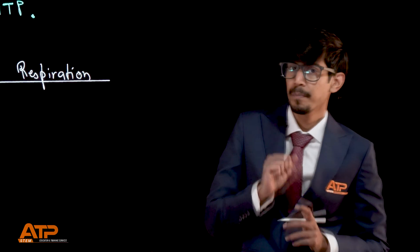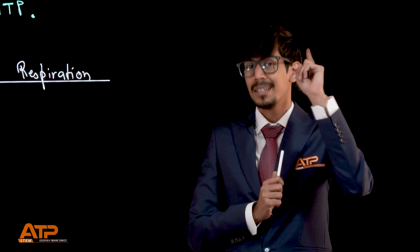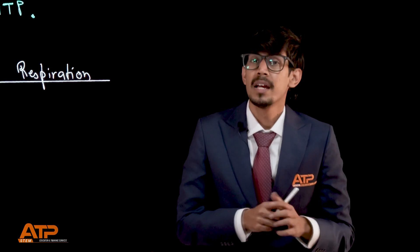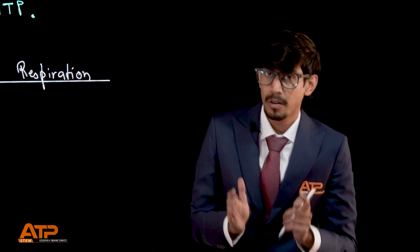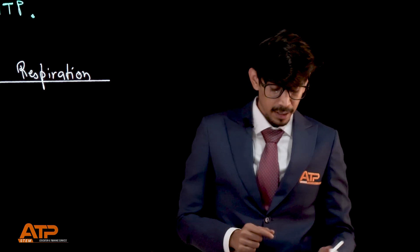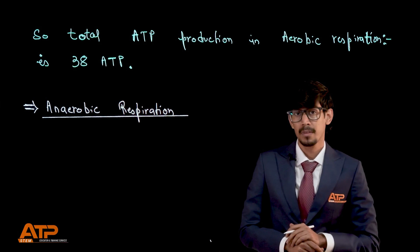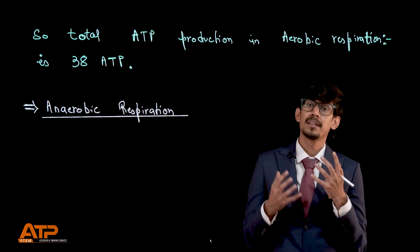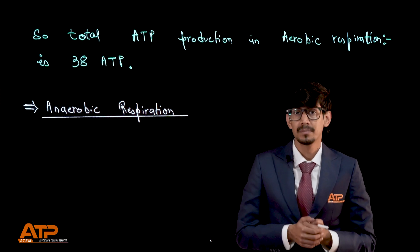So total ATP production in aerobic respiration: we get 2 ATP from glycolysis and 36 ATP from the mitochondrial processes, giving a total of 38 ATP. But do we get the same number of ATPs in anaerobic respiration? Let's see.